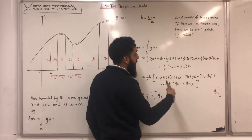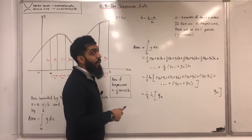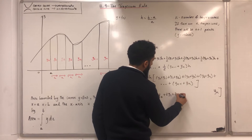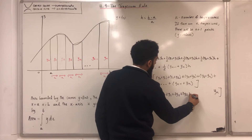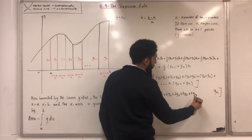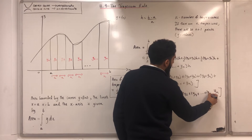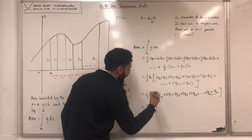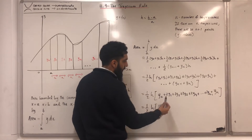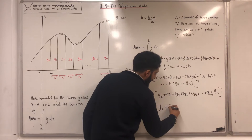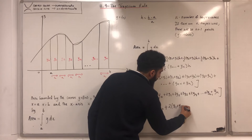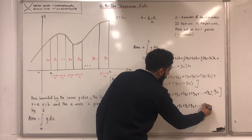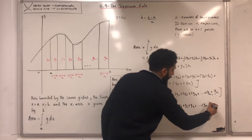...2y₂ plus 2y₃ plus 2y₄ plus dot dot dot plus 2y_(n minus 1) plus y_n. Taking out a common factor of 2 between the middle terms gives 2 times (y₁ plus y₂ plus y₃ plus y₄ plus dot dot dot plus y_(n minus 1)), plus y_n.